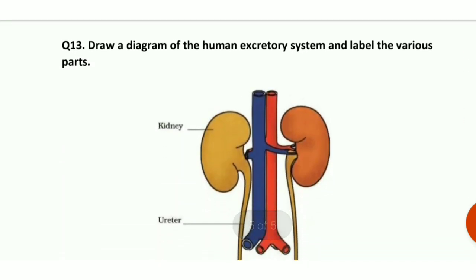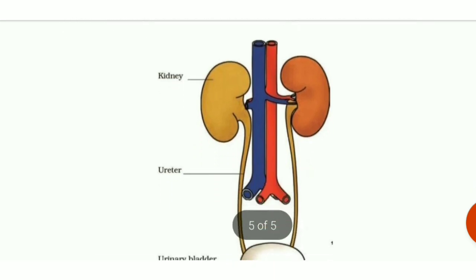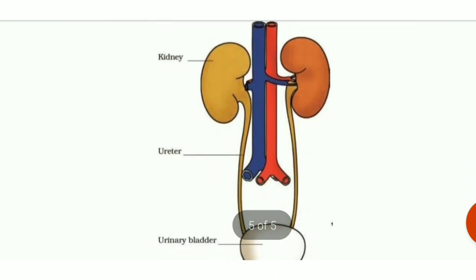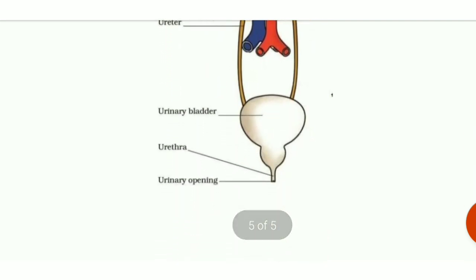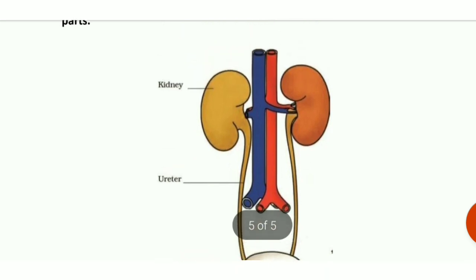The last question: draw a diagram of the human excretory system and label the various parts. This is drawn in your book too; I have drawn it here as well. There is a pair of kidneys where urine formation occurs, the ureter through which urine passes, the urinary bladder where urine is stored, and the opening through which urine exits is called the urethra. I hope you understood this chapter — quickly take out your fair copies and complete the NCERT solutions.